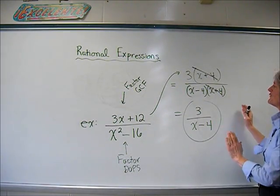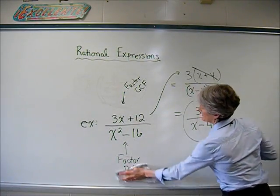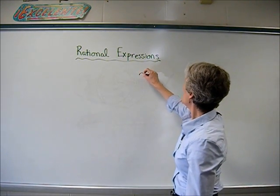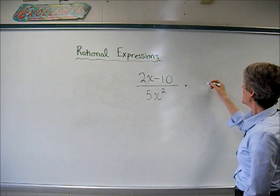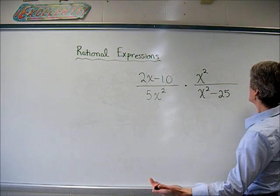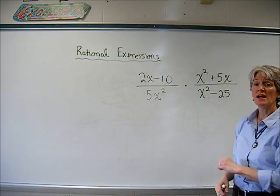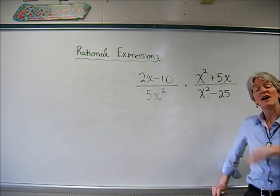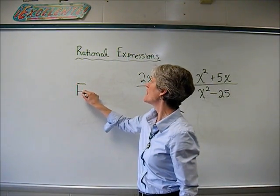Factoring is the name of the game — you have to factor, factor, factor, factor. Let's try some multiplying. Multiplying is essentially the same process, just with a little more going on. Let's say we have 2x minus 10 over 5x squared, times x squared minus 25 over x squared plus 5x. I have a fraction times a fraction. Remember, you multiply numerator times numerator and denominator times denominator. But before doing that, I want to factor everything I can possibly factor.